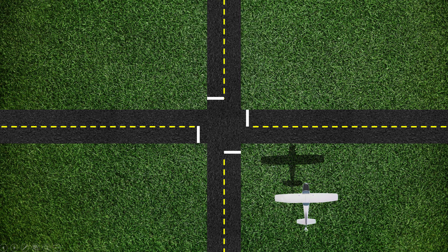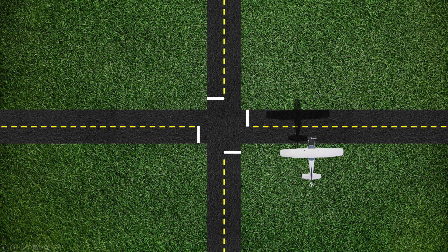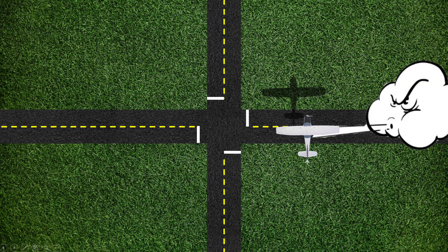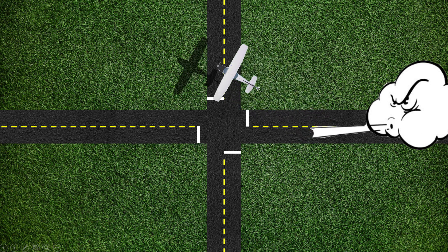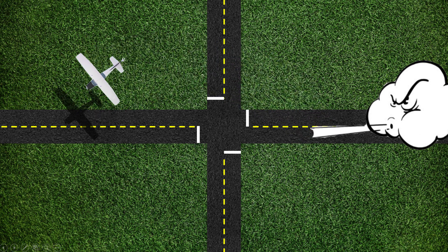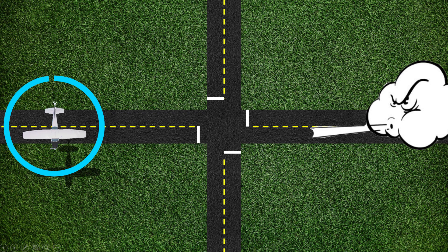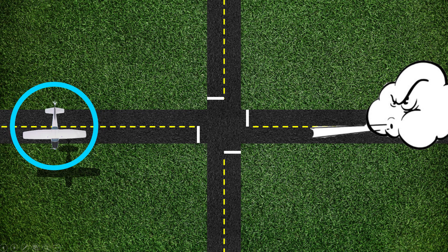If a pilot does a 180-degree turn with a constant bank angle after crossing a straight ground reference line when there is a crosswind, the aircraft will be blown parallel to the reference line and complete their 180-degree turn further down the reference line than desired, increasing their turn's radius.